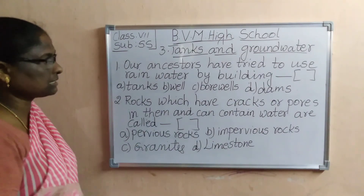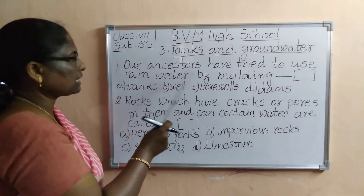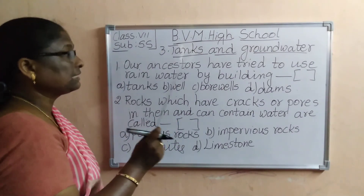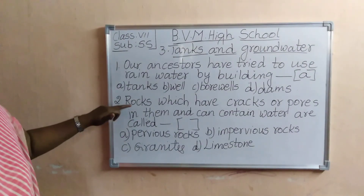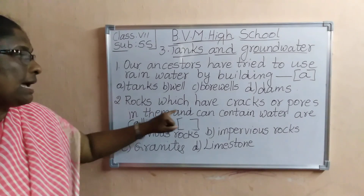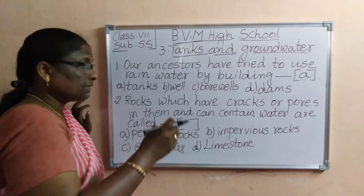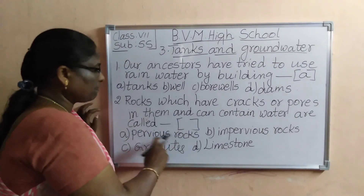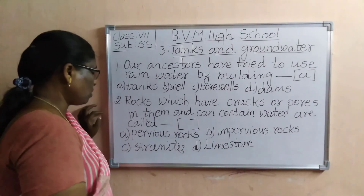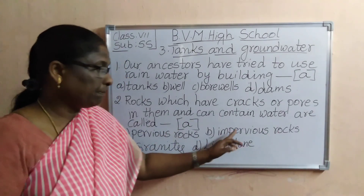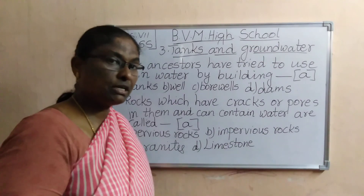First one: ancestors means forefathers — what did they do in those days to use rainwater? They built tanks. Second one: rocks which have cracks and pores and can contain water — what do we call them? The answer is pervious rocks — that is A. In impervious rocks, the water cannot go beneath them. Do you understand the difference between pervious and impervious rocks?